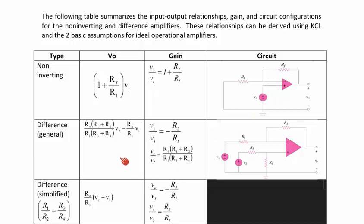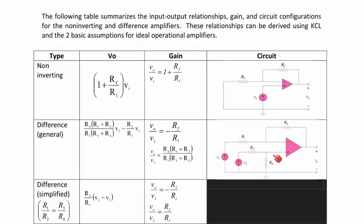For a difference amplifier, V0 equals R4 times (R1 plus R2) over R1 times (R3 plus R4) times V2, minus R2 over R1 times V1. The gain for V1 is negative R2 over R1, and the gain for V2 is R4 times (R1 plus R2) over R1 times (R3 plus R4). A difference amplifier has inputs on both the positive and negative terminals, with feedback resistors and input resistors at each terminal.